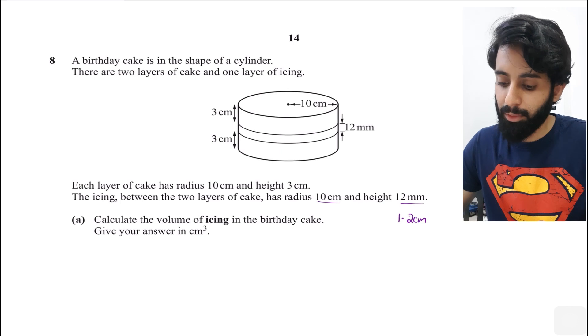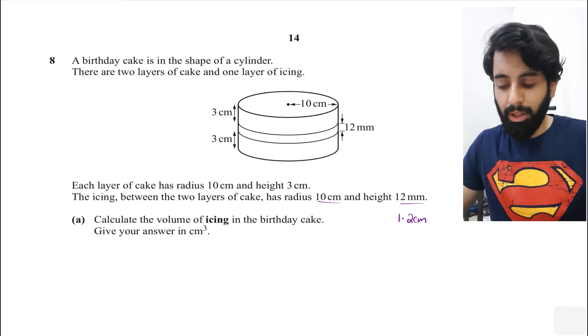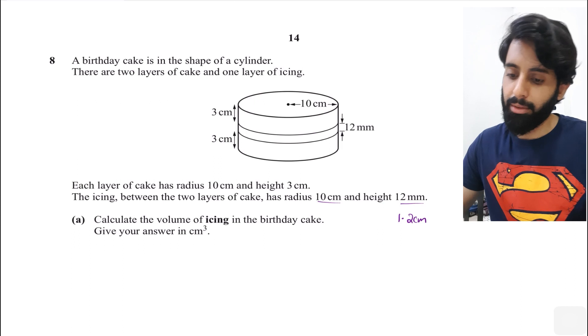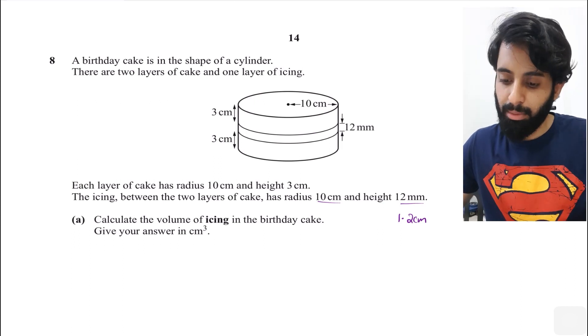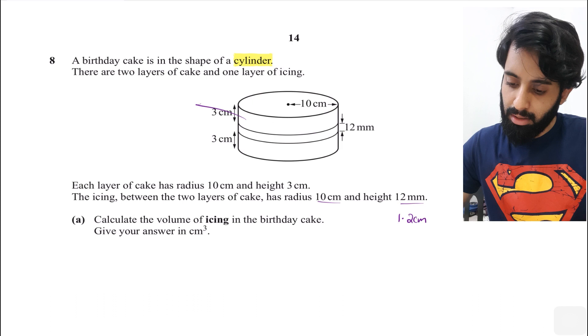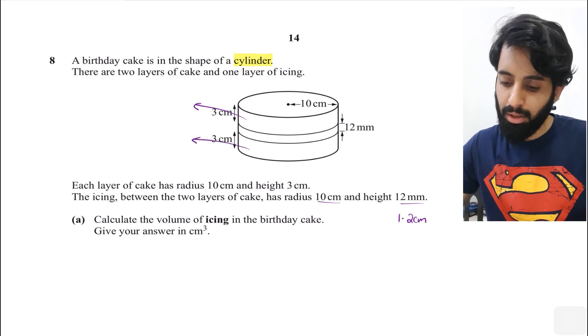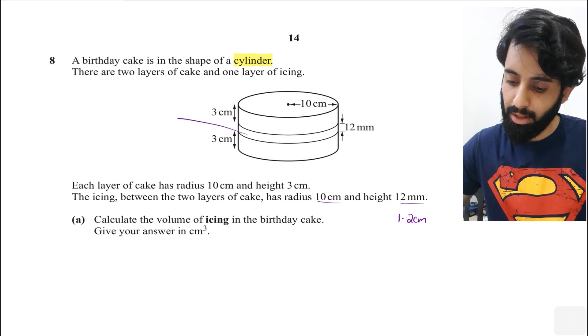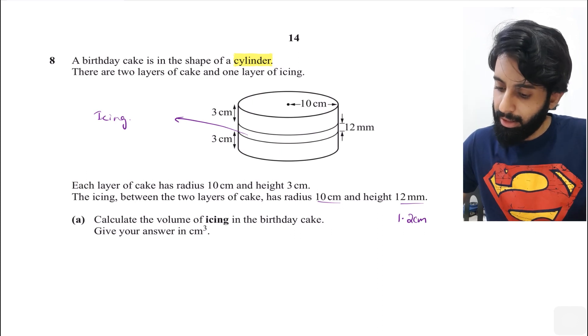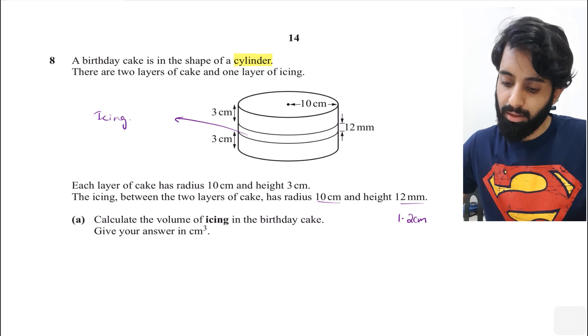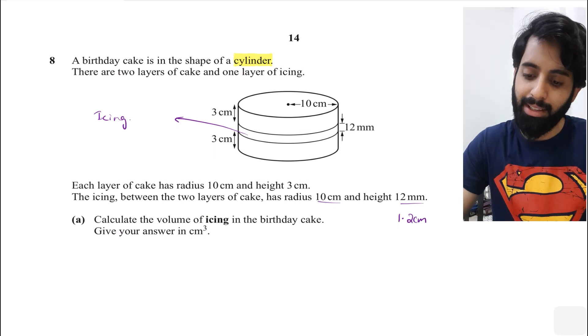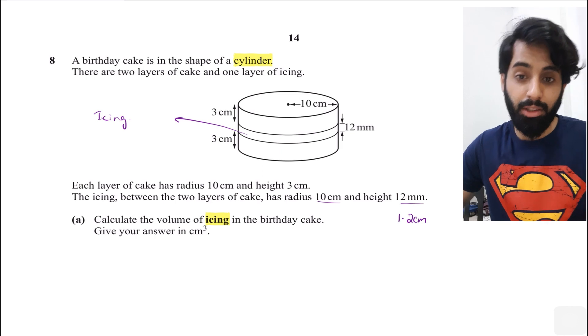Part A says calculate the volume of icing in the birthday cake. I want to read the question again and highlight whatever I think is important. Birthday cake is in the shape of a cylinder, so let's highlight the word cylinder. There are two layers of cake and one layer of icing. In fact, let's just highlight the icing - this right here is the icing that the question is talking about.